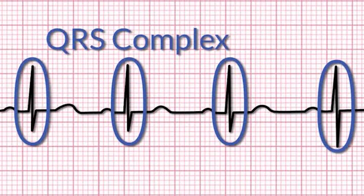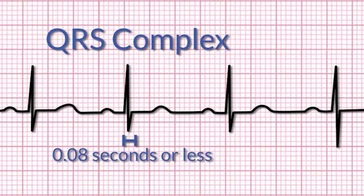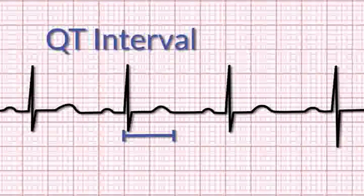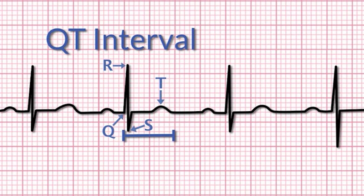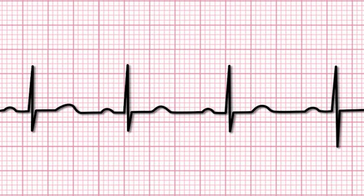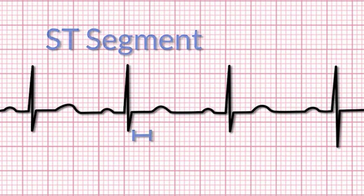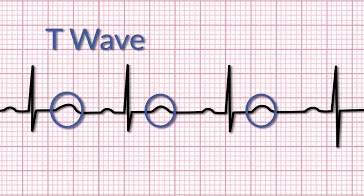The QRS complex represents ventricular contraction. The normal QRS complex is 0.08 seconds or less. The QT interval represents the time from the beginning of the ventricular contraction to the end of the ventricular contraction. The ST segment represents the time between the end of the QRS complex and the T wave; it is isoelectric, meaning it is a flat line. The T wave represents the ventricles recharging for the next contraction.